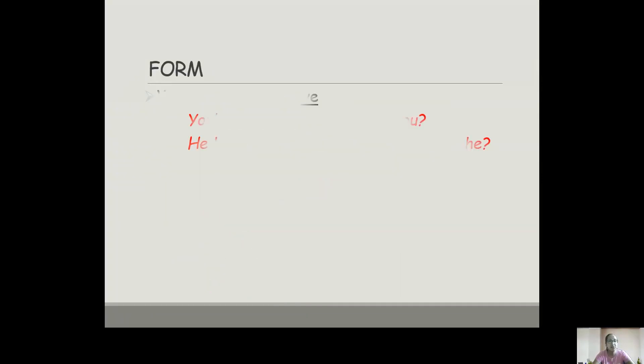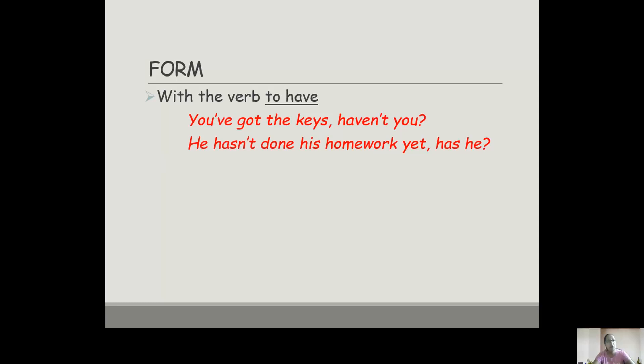Moving on to the verb have: You've got the keys, haven't you? So this is more common with a present perfect tense or perhaps even past perfect. You've, haven't you. 'You've' is short for 'you have.' So in the question tag, we've got the negative form and we swap the word order around. You've got the keys, haven't you? He hasn't done his homework yet, has he?